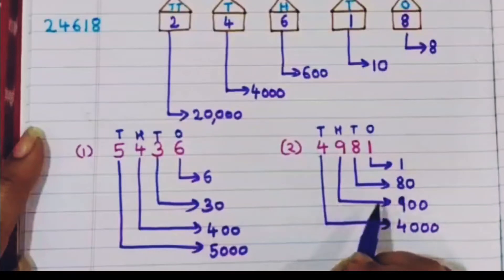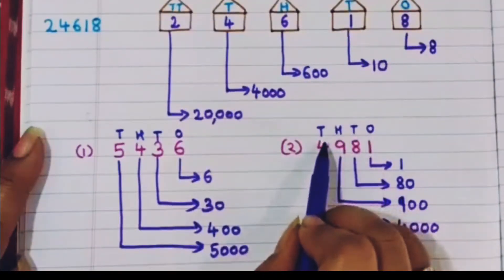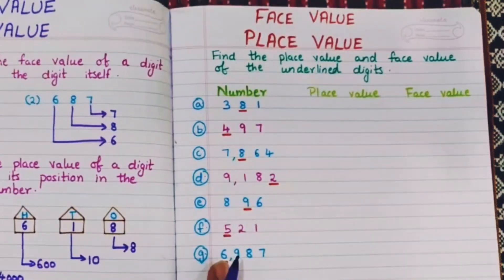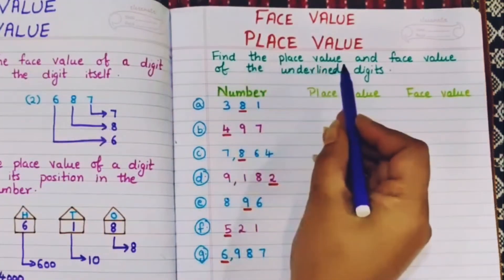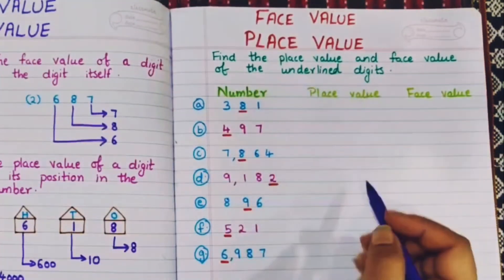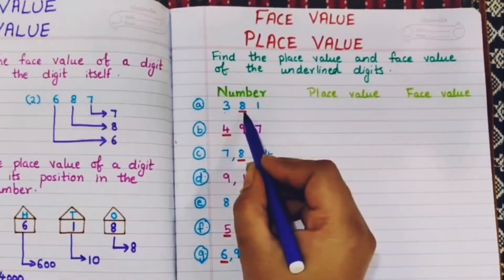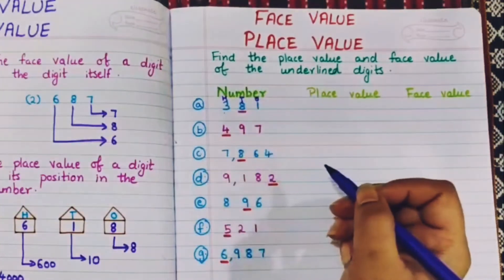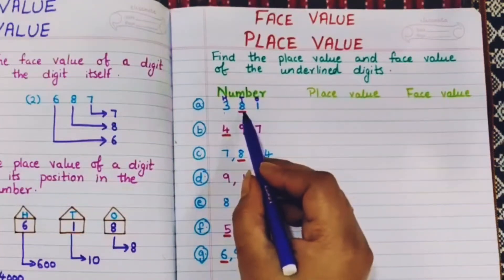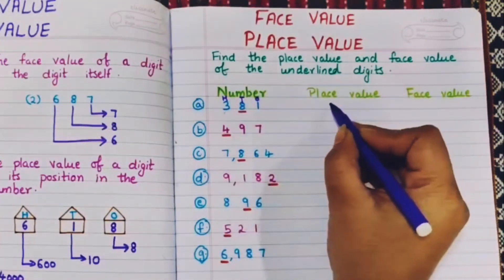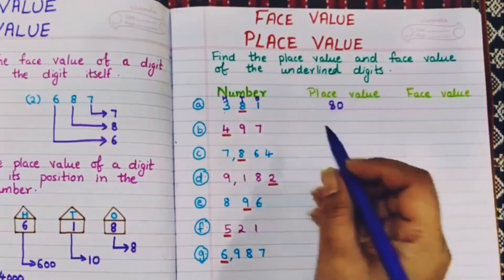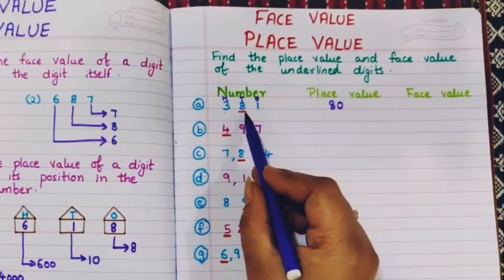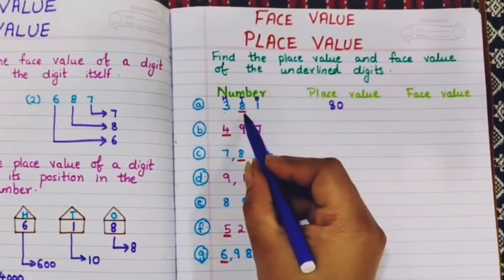First we give the houses to the digits, then it becomes easy to find the place value. Now let's find the place value and face value of the underlined digits. For 381: positions are ones, tens, hundreds. 8 is in the tens position, so the place value is 80. The face value of 8 is 8 itself.